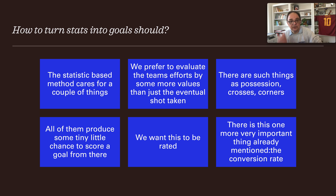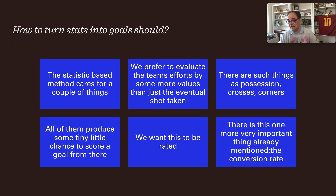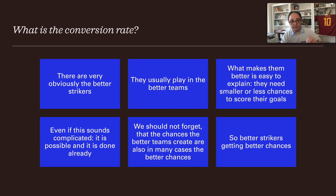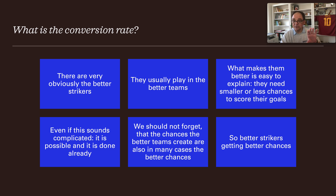How do we turn stats into goals? The statistic-based method accounts for more than just the eventual shot taken. We evaluate a team's efforts through values like possession, crosses, and corners — all of which produce some small chance to score a goal. We also account for the conversion rate: top strikers need fewer chances to score because they have a better conversion rate. Better strikers also tend to get better chances, making them convert at a higher rate.